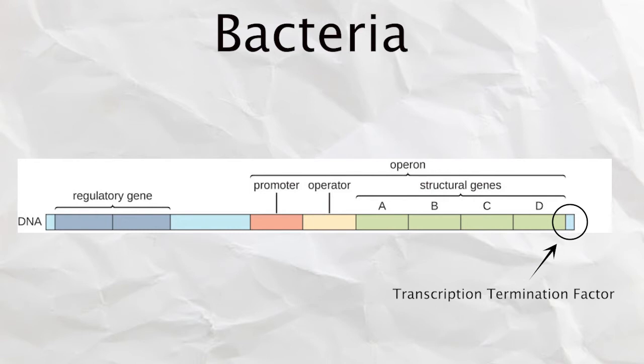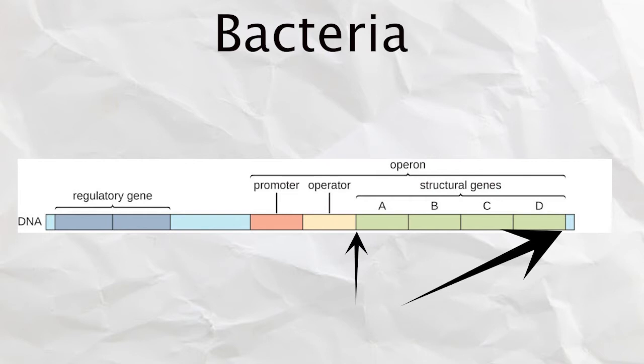After the promoter and before the transcription termination factor are UTRs, untranslated regions that don't aid in forming the final functional protein.